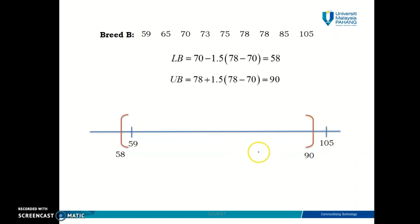So let's check. Do you have any data value that is greater than 90? The answer is yes. 105 here is greater than your upper boundary. So 105 is an outlier. Okay, so let's check one more on the other side. Do you have any data value that is smaller than 58? No, right? Because the smallest data that you have in breed B is 59. So there is no data smaller than 58. So in this case, breed B has one outlier, which is 105, right?